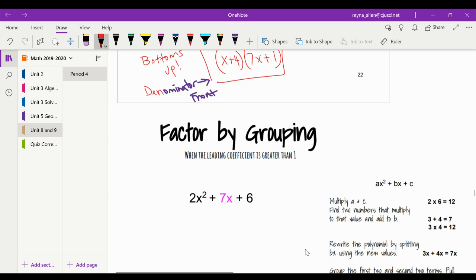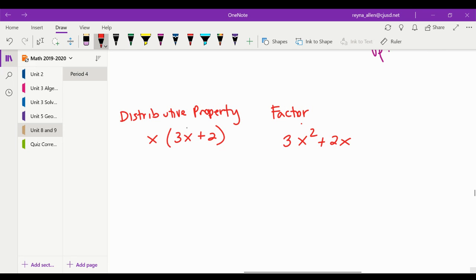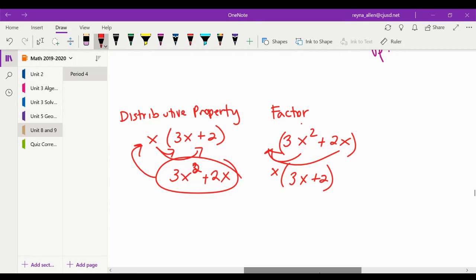This is your last method for factoring. It's called grouping, but I actually call it backwards distributive property because that's what you're doing. If you remember, the distributive property is taking a term and multiplying it by everything on the inside. Those multiply to give you 3x squared, and then that multiplies to give you 2x. Factoring by grouping is just saying you're taking your answer and you want to go backwards. So what do these have in common? Each term has an x, so you're going to factor out an x. The x goes on the outside, and then you're left with 3x plus 2. So we're going to use that idea today.